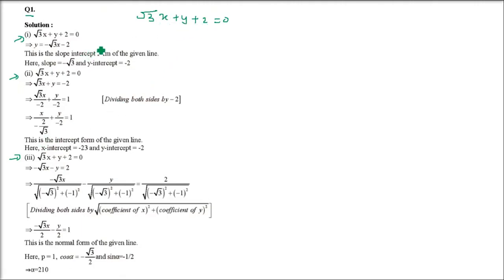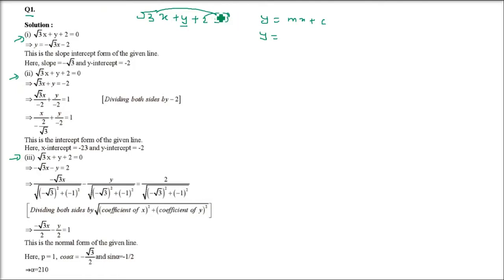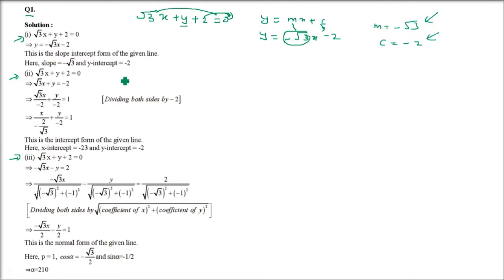√3x + y + 2 = 0. This is the first part — we have to find the slope-intercept form. We convert it to y = mx + c. We keep y on the left-hand side and transfer √3x and 2 to the other side. Equating with y = mx + c, m equals minus √3 and c equals minus 2. So this is the slope and this is the y-intercept.